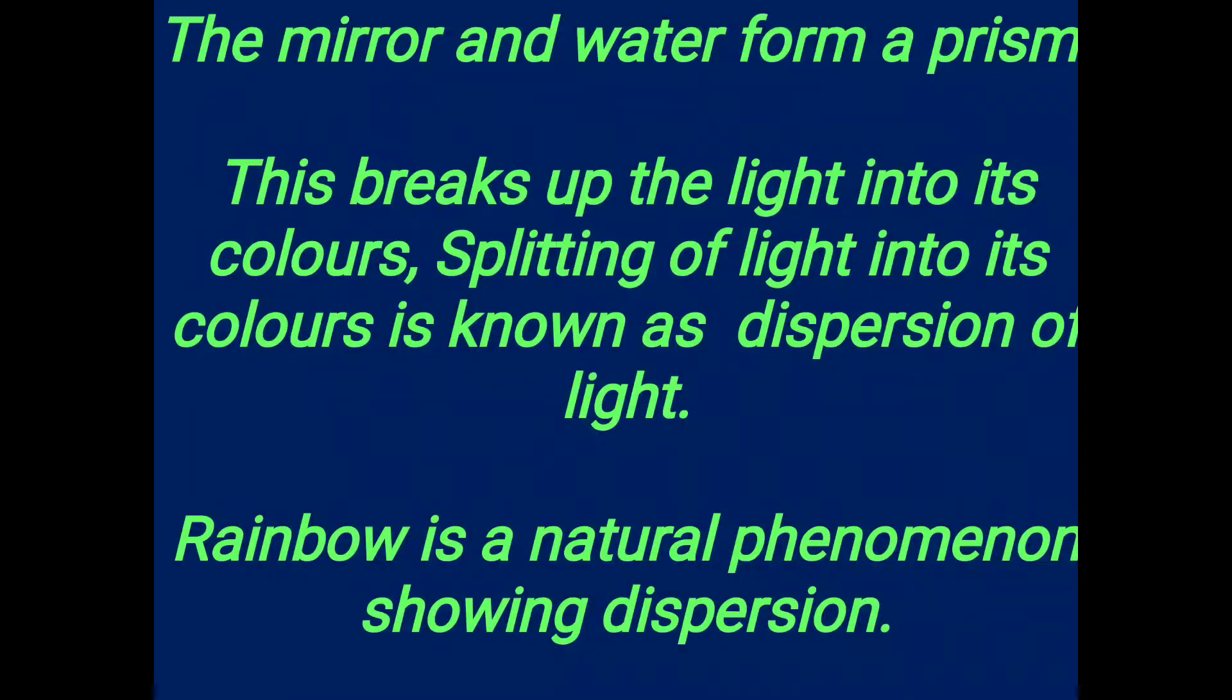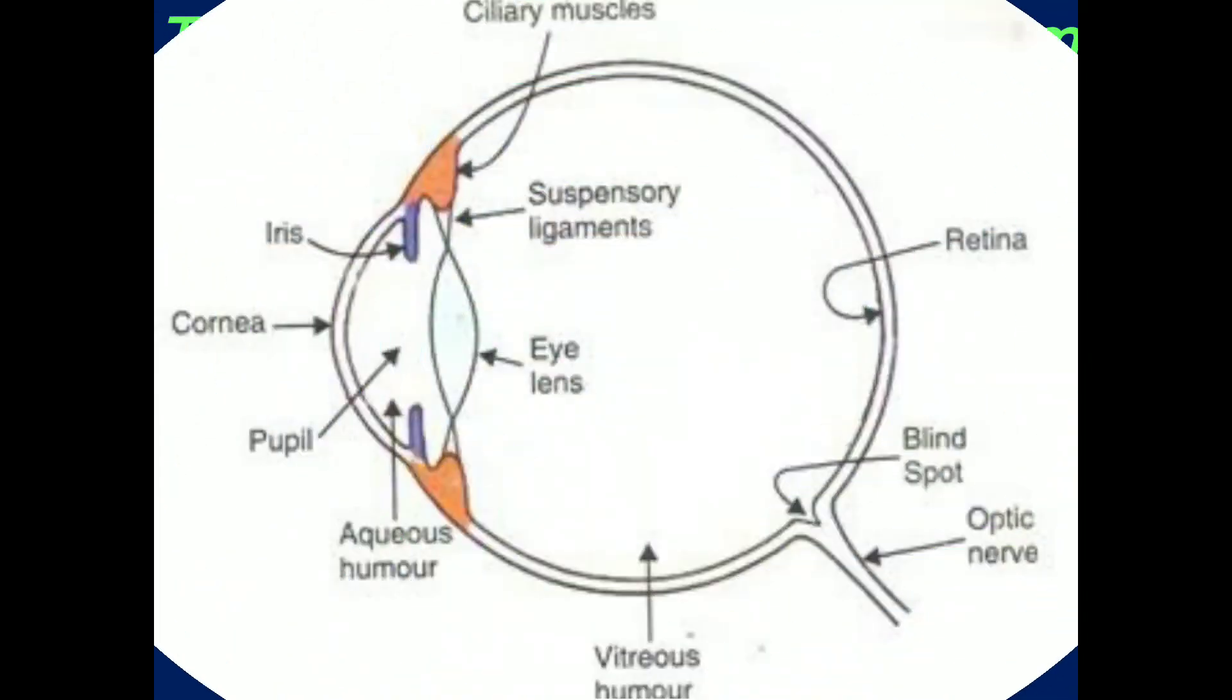The rainbow is a natural phenomenon showing dispersion of light. This is a striking example.